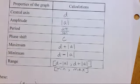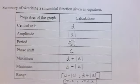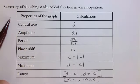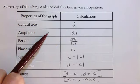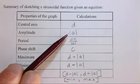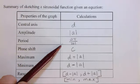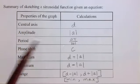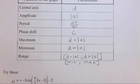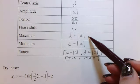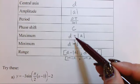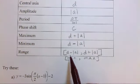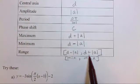So to summarize what we're doing here, I'm going to go on to the summary. So we've got our properties of the graph. So our central axis lies at d. Our amplitude is given to us by the absolute value of a. The period is determined by 2π divided by the absolute value of b. Our phase shift is c. So that's how far left or right I start. And my max and min are determined by d plus or minus the absolute value of a. And that's also how I get my range.